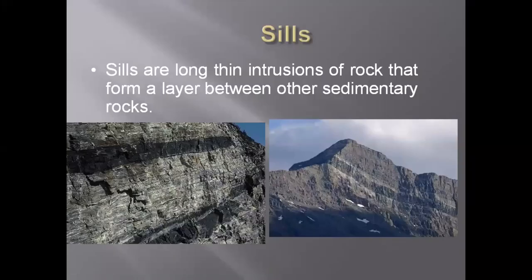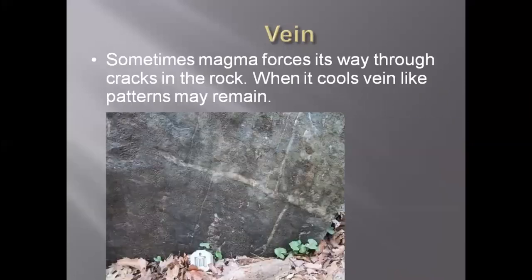Sills are long and thin intrusions that are almost horizontal. They have no angle and lie in the same layer as other sedimentary rocks. Then we have veins, which are smaller-scale fracture fillings. When fluid in the fractures cools down, it changes into the form of a vein.